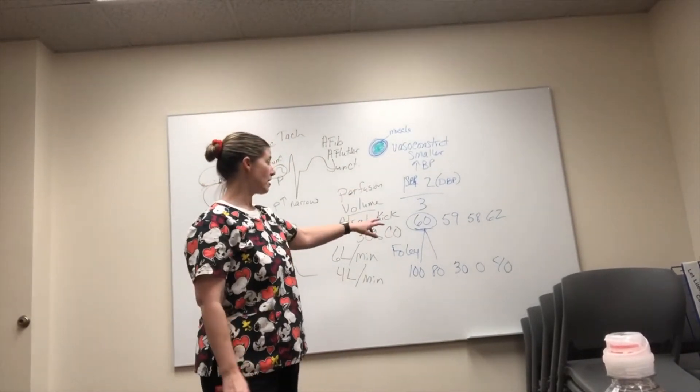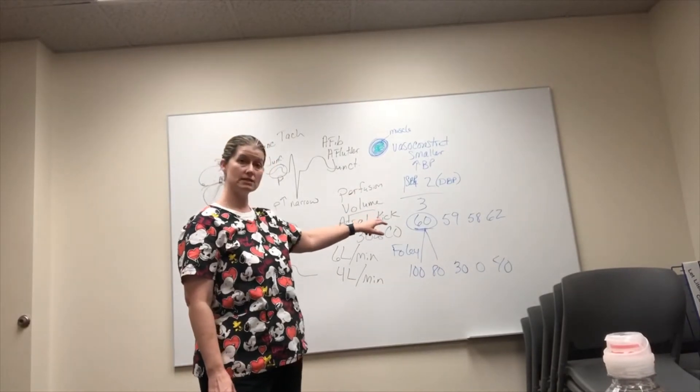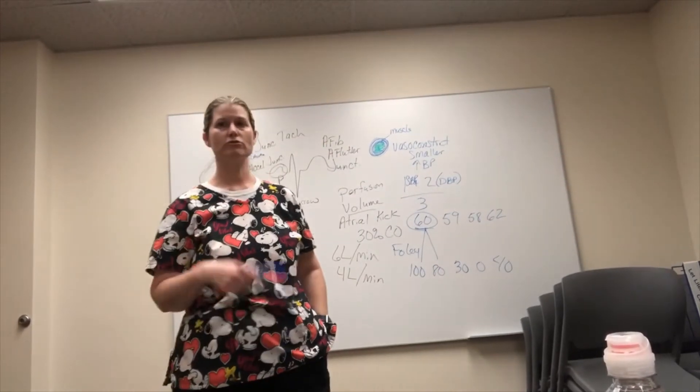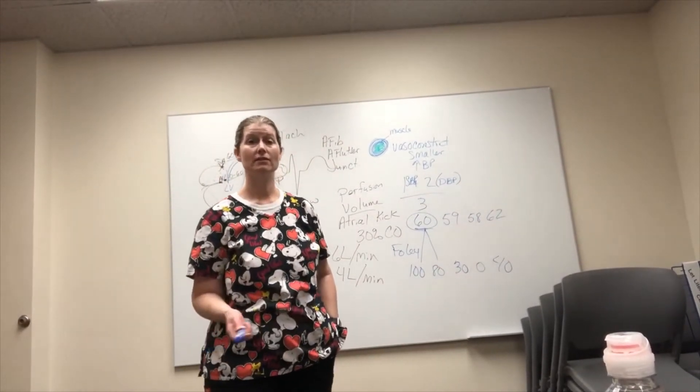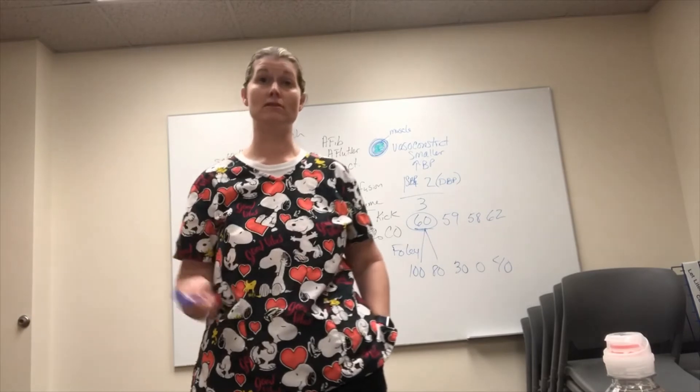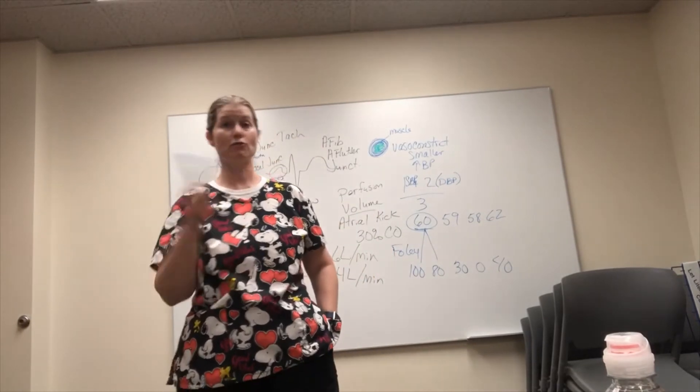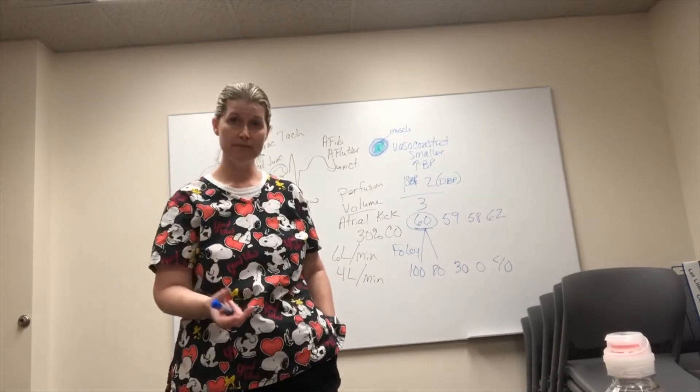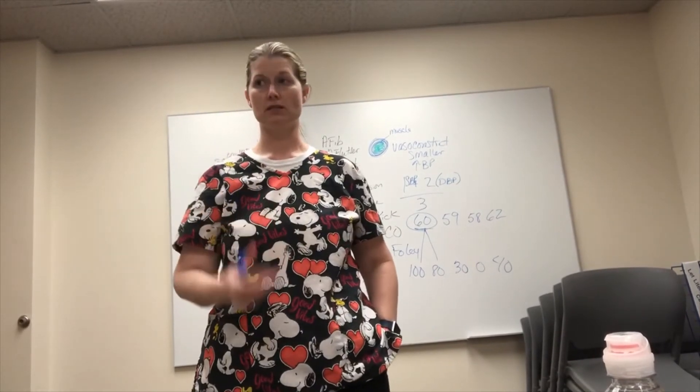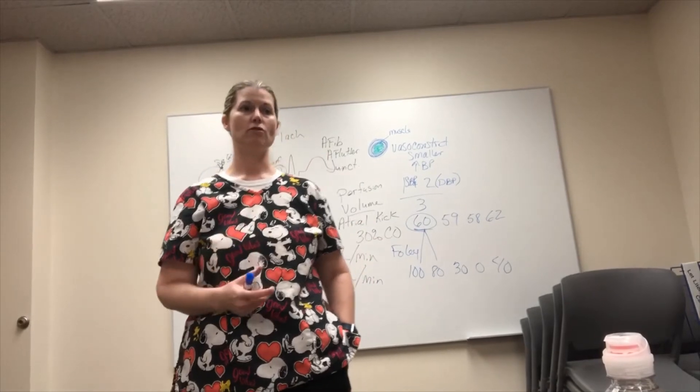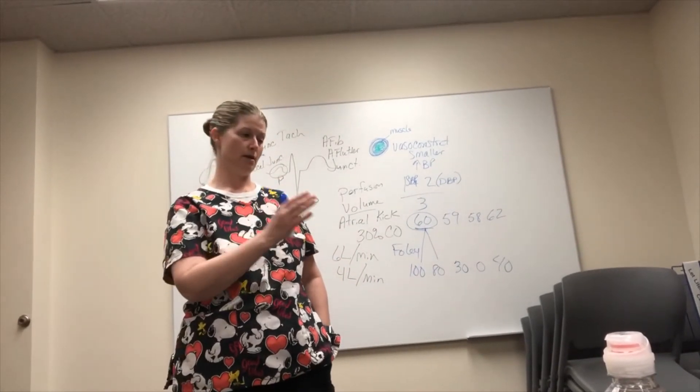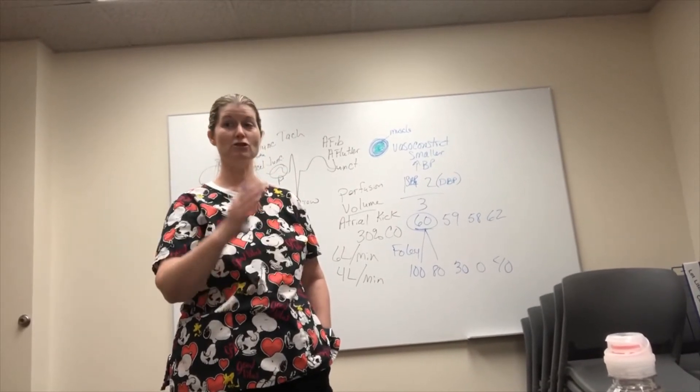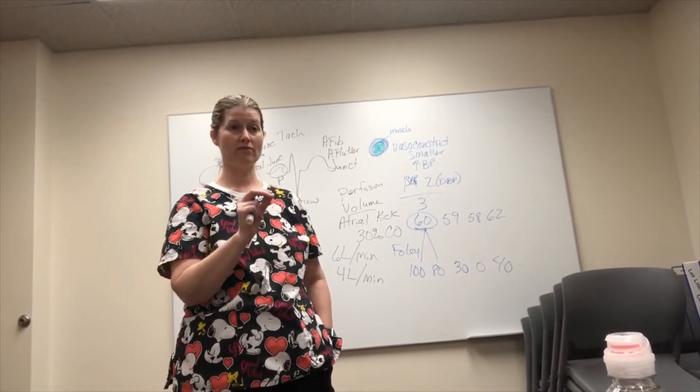So the other thing about the MAP - we know it needs to be 60. This is why a rapid response nurse will come in the room, the blood pressure is like 85 over 50, and they're like yeah, whatever, the mean is good. And everybody else is freaking out like oh my God we need a drip or something. And we know that we have a little bit of time because the MAP is above 60. So that's where you become more comfortable with an acute patient when you know that information.